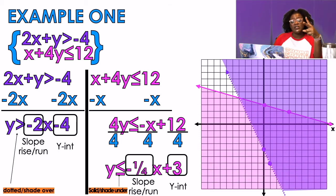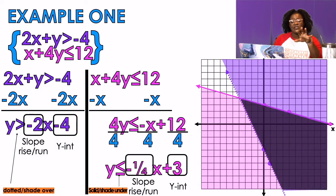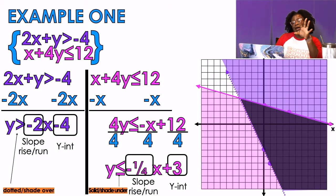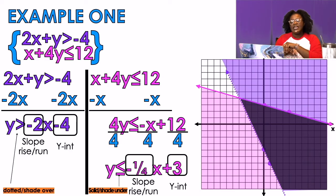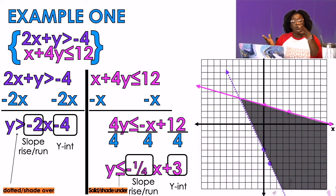I have two colors on the screen. Where the purple and pink cross is my solution set. That little black area is where I'll actually find my solutions — I'm not worried about the purple on top or the pink off to the side, just that black area where they connect. Any point in that region is a solution to my problem.